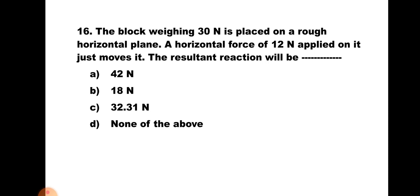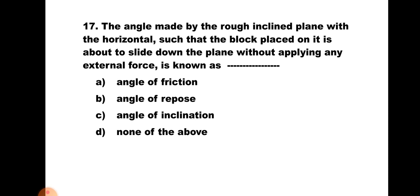Question number sixteen: A block weighing 30 N is placed on a rough horizontal plane. A horizontal force of 12 N applied on it just moves it. The resultant reaction will be — a) 42 N, b) 18 N, c) 32.31 N, d) None of the above. The limiting frictional force = 12 N and normal reaction = 30 N, which are perpendicular. Resultant reaction = √(12² + 30²) = 32.31 N. Hence the correct answer is c) 32.31 N.